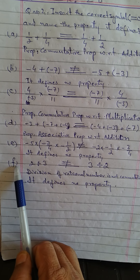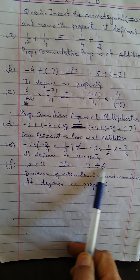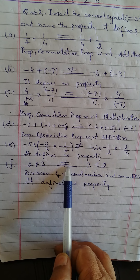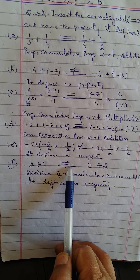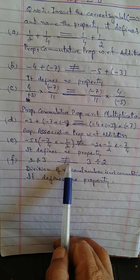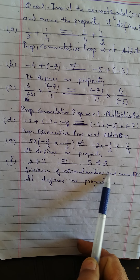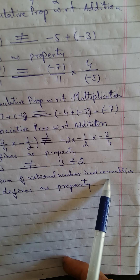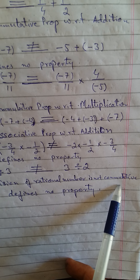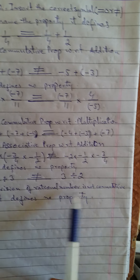Part number F: 2 divided by 3, blank, 3 divided by 2. An inequality sign (≠) will come in the blank. Division of rational numbers is not commutative, so it defines no property.